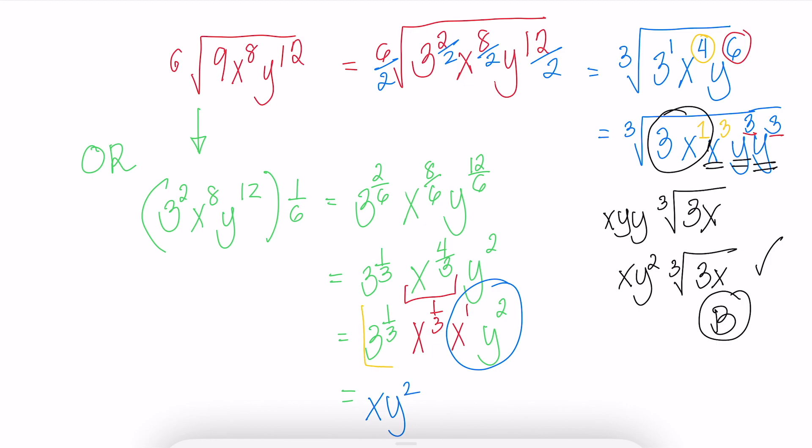The one that has a 1 third exponent will be inside the cube root. So that would be 3x, same as our answer. Thank you.